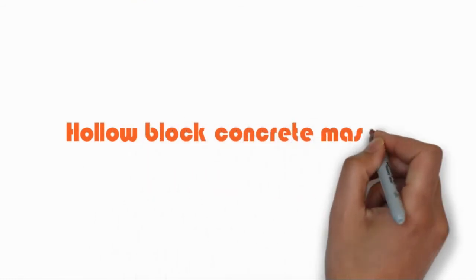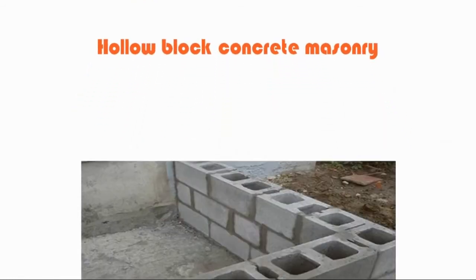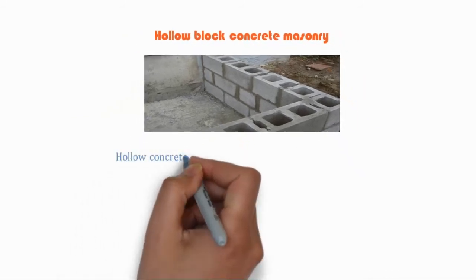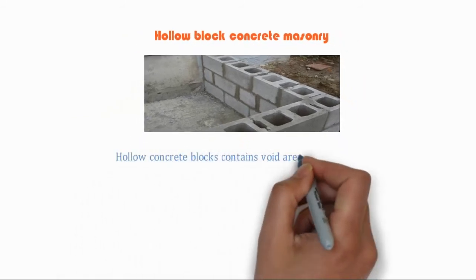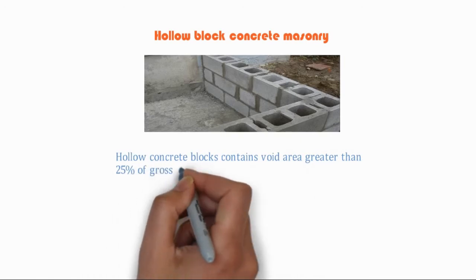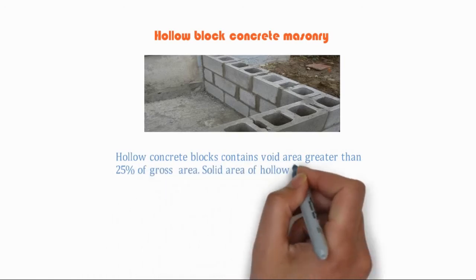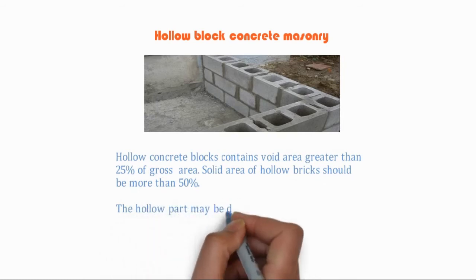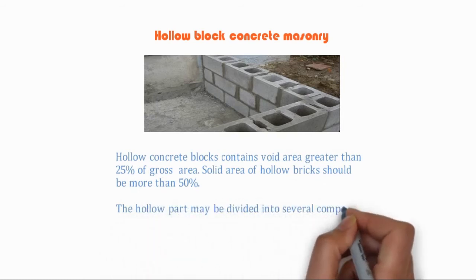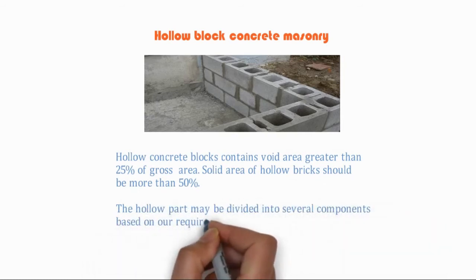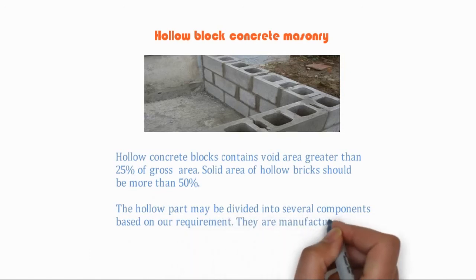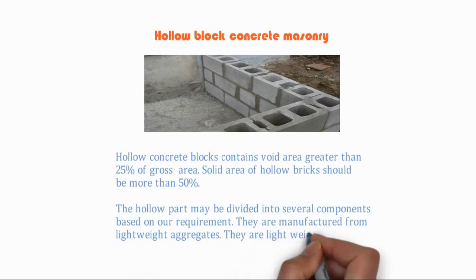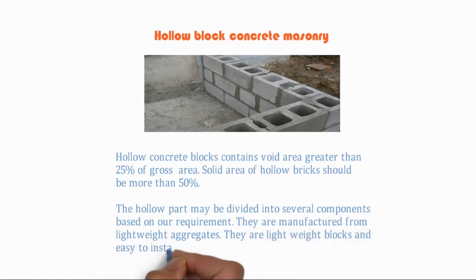Hollow concrete blocks contain a void area greater than 25% of gross area. The solid area of hollow bricks should be more than 50%. The hollow part may be divided into several components based on requirement. They are manufactured from lightweight aggregates and are lightweight blocks that are easy to install.